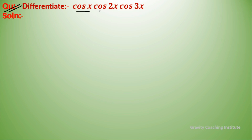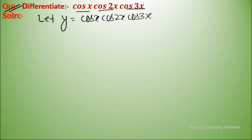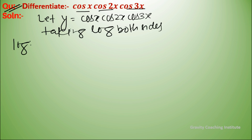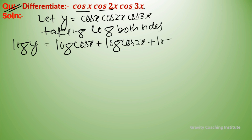Differentiate cos(x)·cos(2x)·cos(3x). Let y equal to cos(x)·cos(2x)·cos(3x). Now we take log of both sides, so log(y) equals log(cos x) plus log(cos 2x) plus log(cos 3x), using the formula log(m·n) equals log(m) plus log(n).